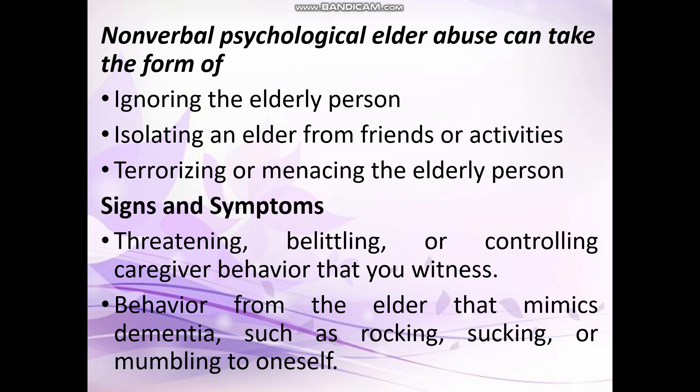The signs and symptoms of emotional abuse mainly include threatening behavior and belittling. Belittling means making someone feel they are incapable. Behavior from the elder that mimics dementia — such as rocking, which involves gentle repetitive movements, sucking, or mumbling to oneself — is also a sign. In emotional abuse, the behavior of the elder becomes changed.